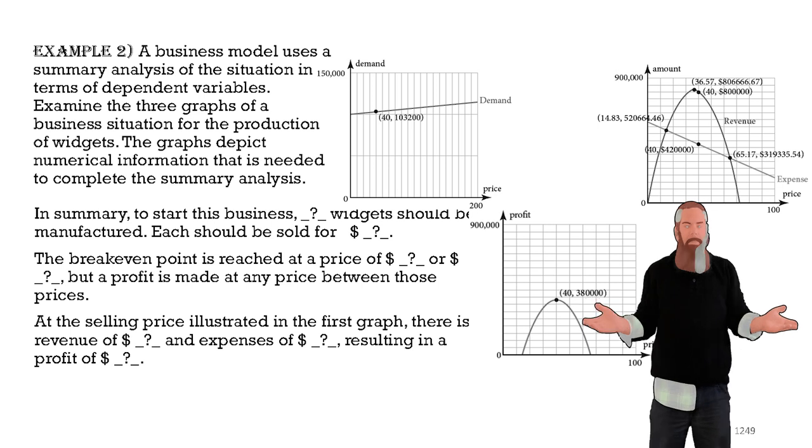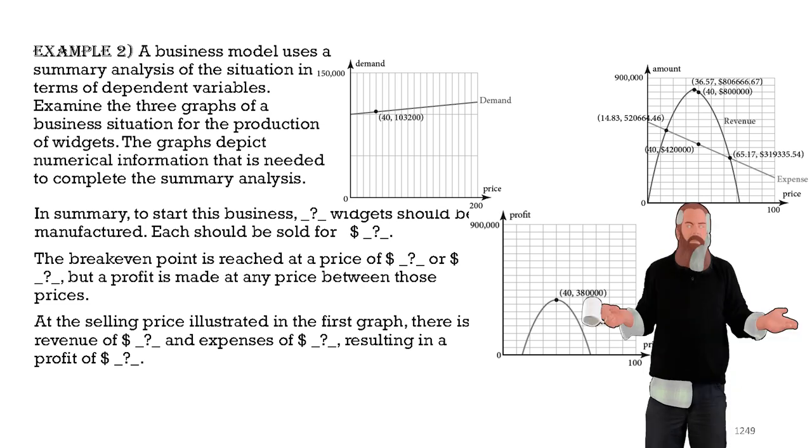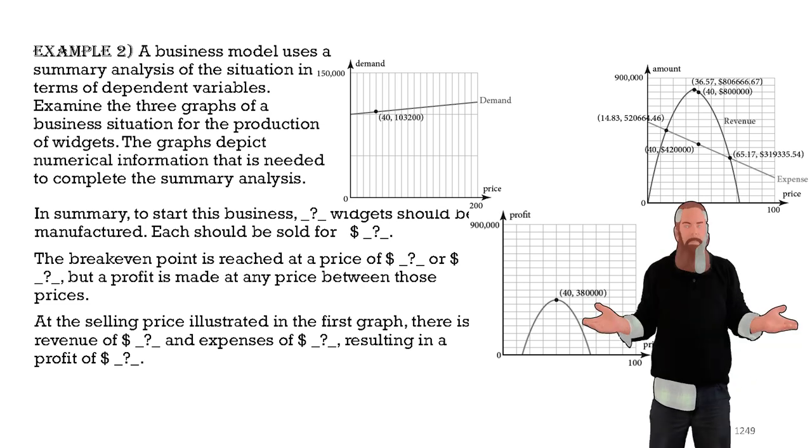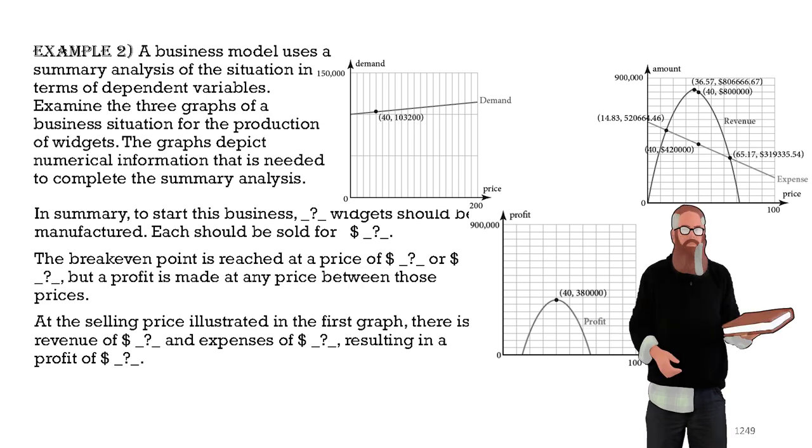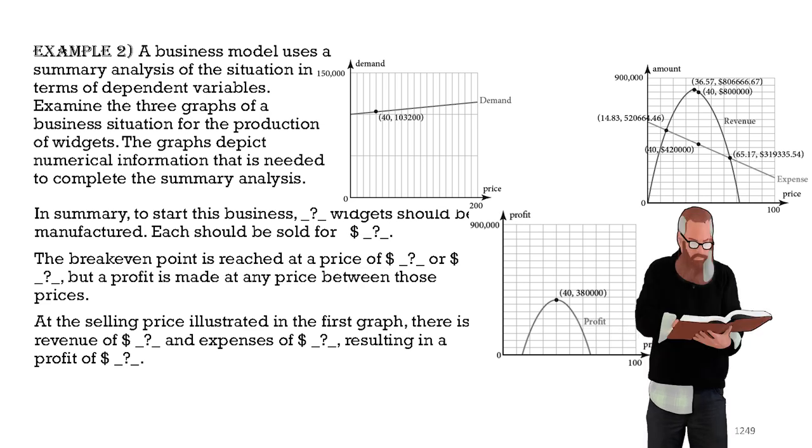At the selling price illustrated in the first graph, there is a revenue of 800,000 dollars and an expense of 420,000 dollars, resulting in a profit of 380,000.